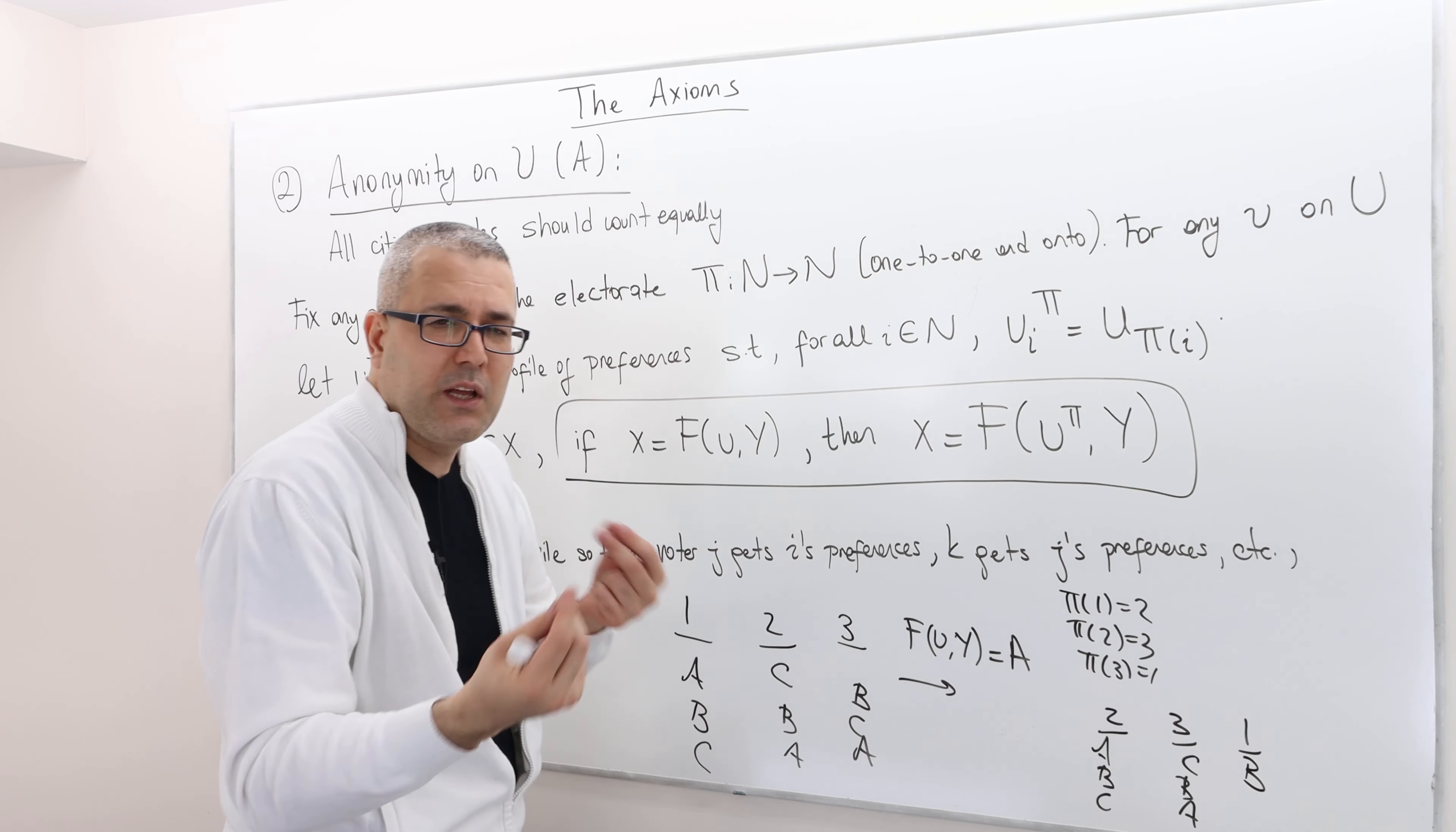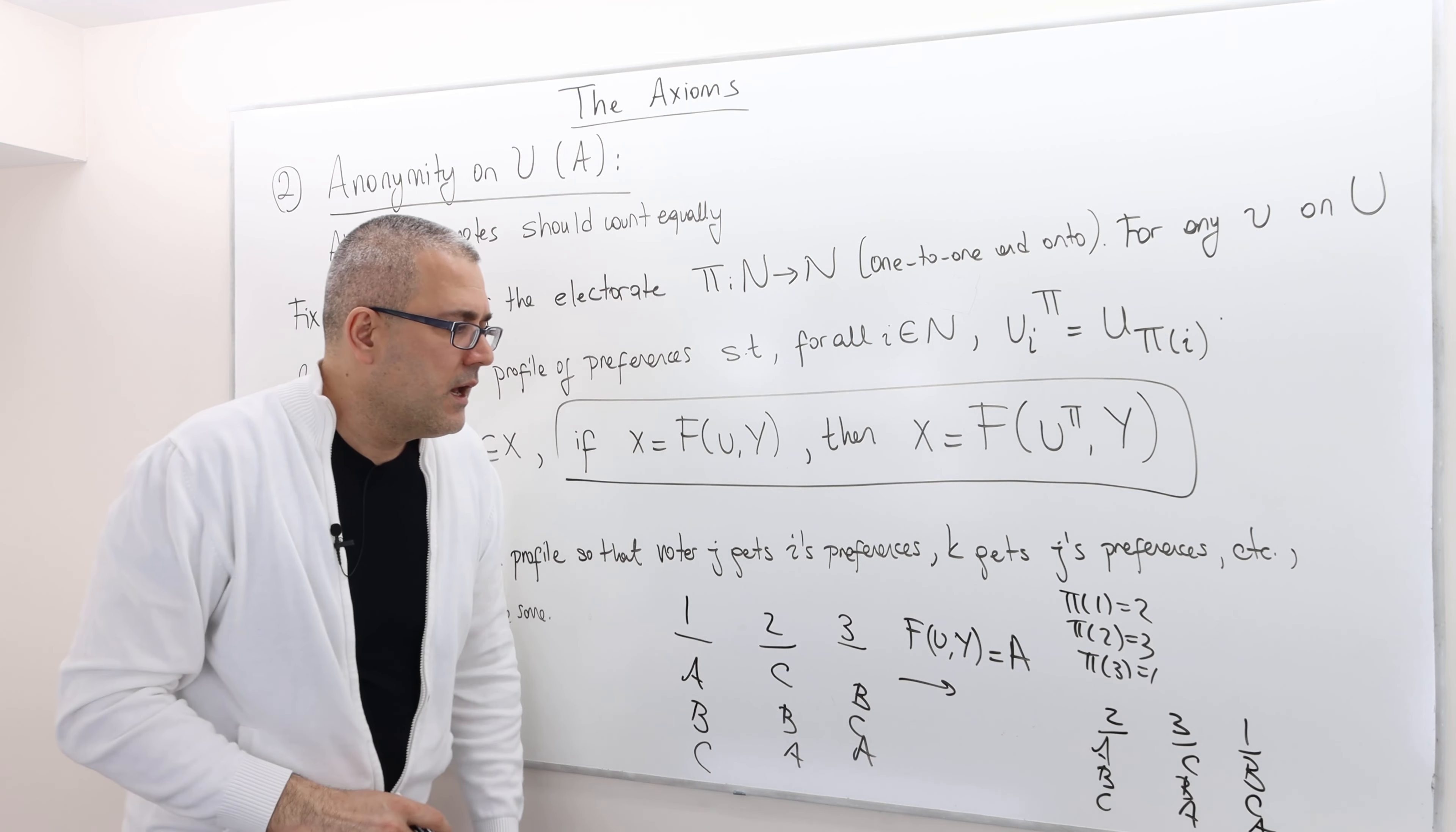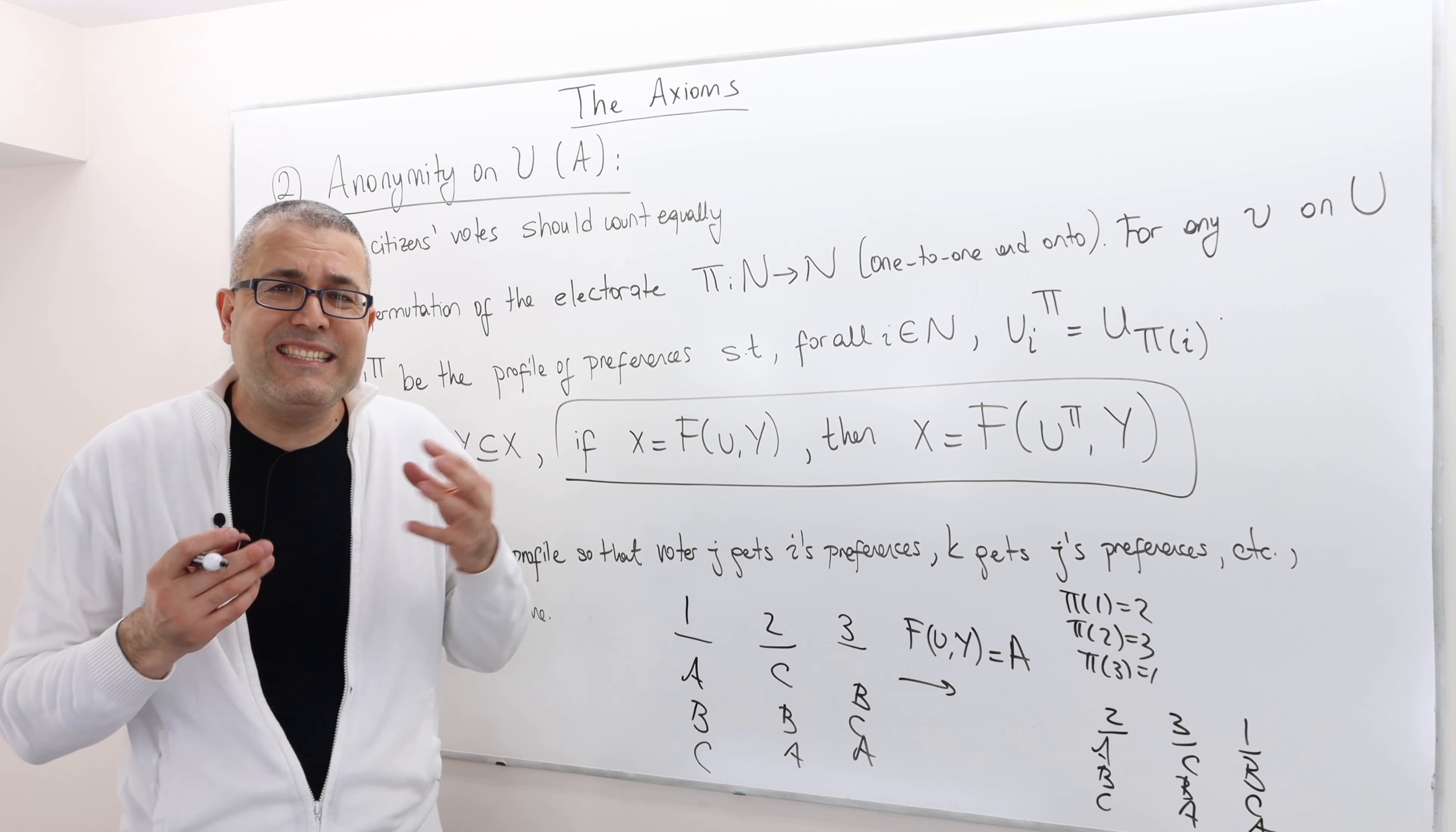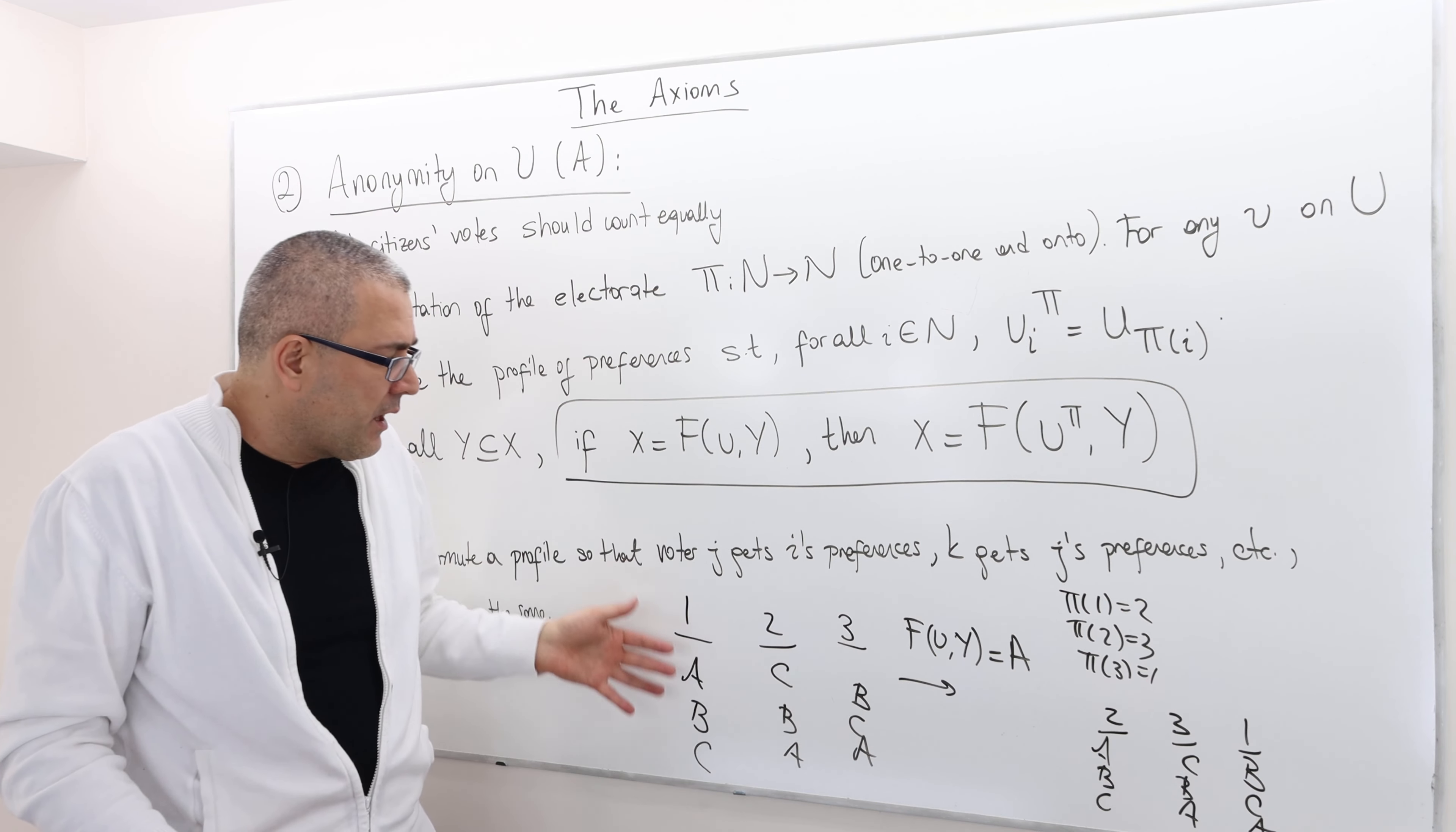I keep using player and voter interchangeably. So b, c, a. So in fact, here, these two profiles are exactly the same profiles of preferences, just the names of the, I mean, here,